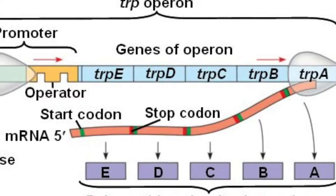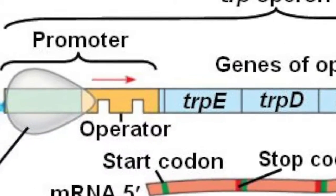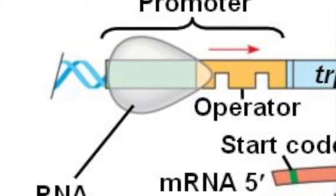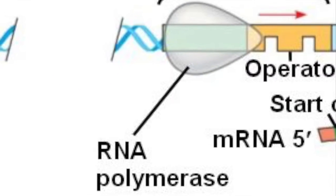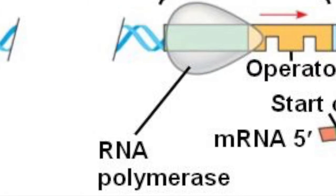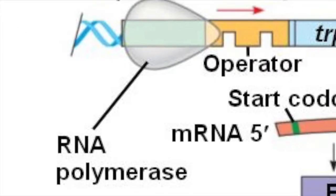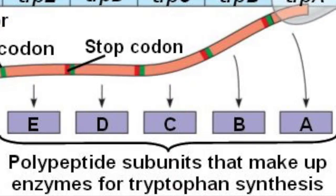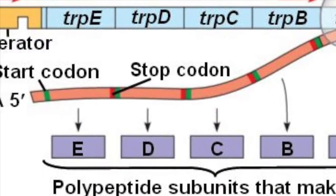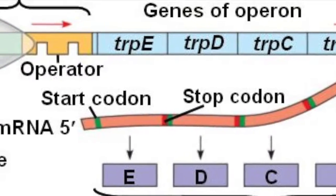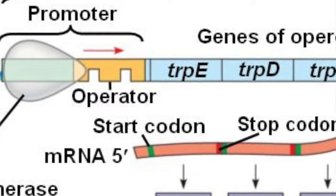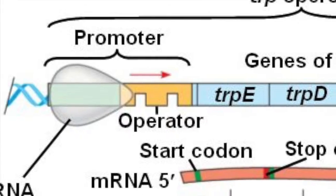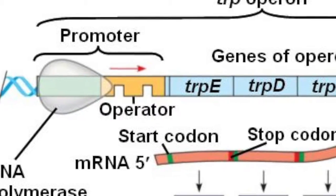In the absence of tryptophan, the trp repressor is inactive and can't bind to the operator, so the RNA polymerase is free to transcribe mRNA coding for tryptophan. When tryptophan is present, however, it binds to the trp repressor on the operator. This renders the RNA polymerase unable to transcribe, so when the trp operon is in the presence of tryptophan, it cannot transcribe more tryptophan.